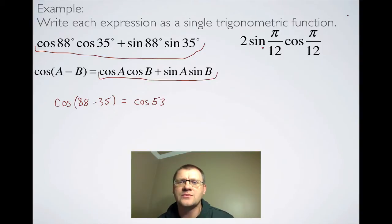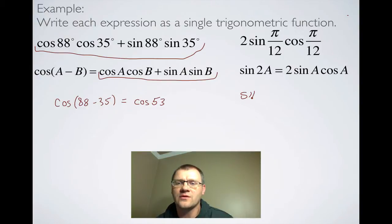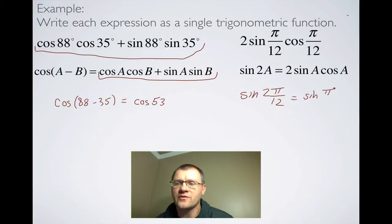Our second one is 2·sine(π/12)·cos(π/12). Looking at your identity sheet, you should see that it looks an awful lot like the double-angle identity sine of 2a, which gives you 2·sine(a)·cos(a). So 2·sine(π/12)·cos(π/12) means the 'a' part is π/12, and we can simplify that into sine of π/6.